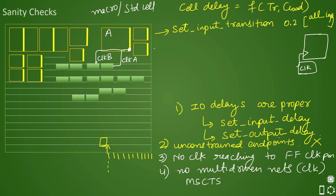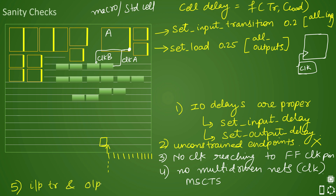Similarly, for defining proper constraints for output ports, we must have a defined load on the output ports. You can define this using set_load — for example, set_load 25pF [all_outputs] — to define the capacitive load on output ports. The requirement is that input transition and output load must be defined on all input and output ports respectively. This is a requirement to be defined in the SDC.